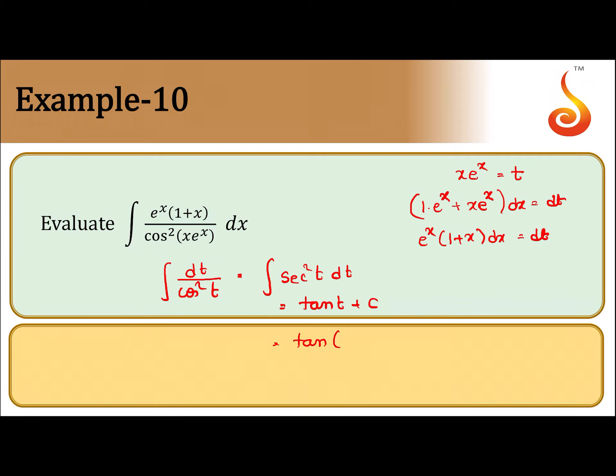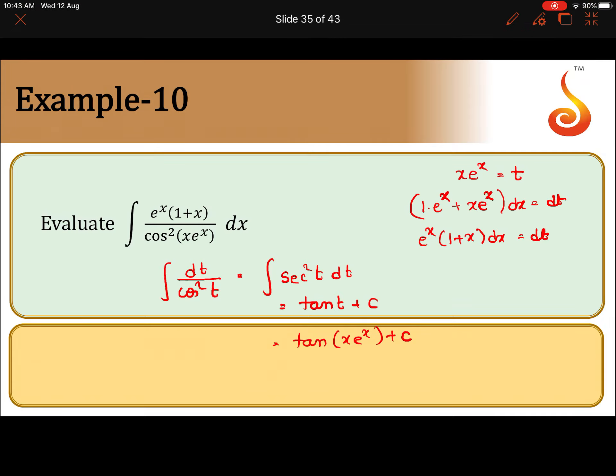Substituting back, the answer is tan(x·e to the power x) plus c. This is straightforward because the differentiation of tan x is secant squared x, so the integration of secant squared x is tan x.